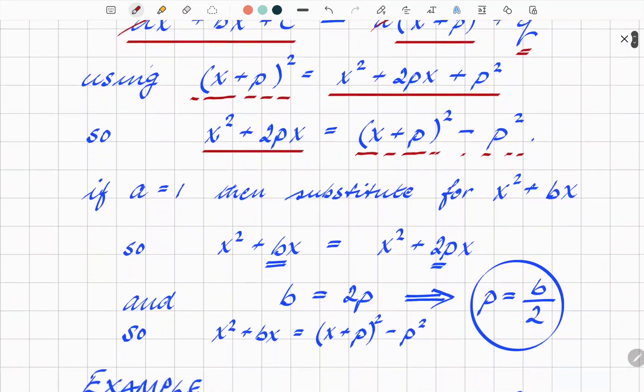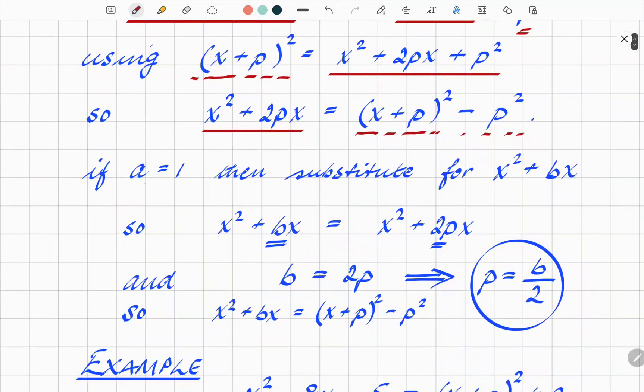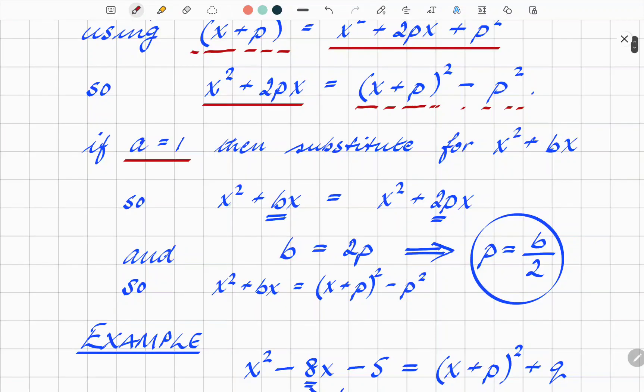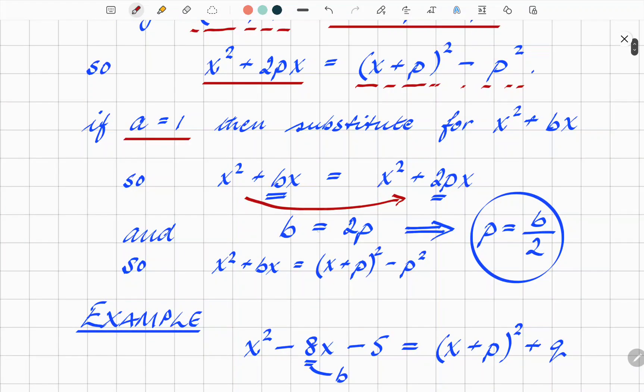So we're going to use this result. As I've already said, let a equal 1, then substitute for x² + bx. So if we say that x² + bx must be the same as x² + 2px, that tells us that b equals 2p. And therefore, that number p in the brackets must always be half of b.